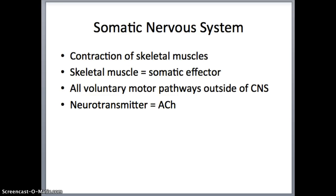Starting with the somatic nervous system, this is the system involved in your voluntary movements — mostly the contraction of your skeletal muscles. Those skeletal muscles are called your somatic effectors because they carry out the response to stimuli. All voluntary motor pathways are outside of the central nervous system, which makes sense because that's where the motor neurons are found — in the peripheral nervous system. The main neurotransmitter involved in the somatic nervous system is acetylcholine.